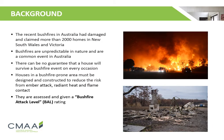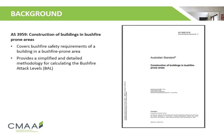Given the bushfires New South Wales and Victoria have experienced in early 2020, houses in bushfire prone areas must be carefully designed and constructed to reduce the risk of ember attack, radiant heat and flame contact. Bushfires are unpredictable and are a common event in Australia. Houses in bushfire prone areas are assessed and given a bushfire attack level, or BAL rating. AS3959 is the main standard covering bushfire safety requirements, providing a simple and detailed methodology for calculating bushfire attack levels.